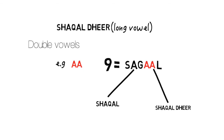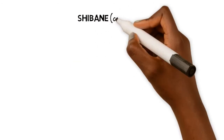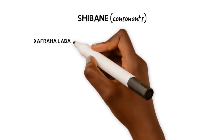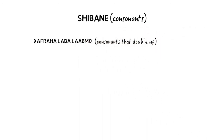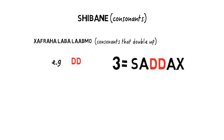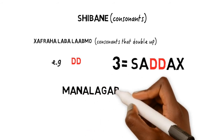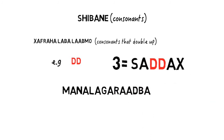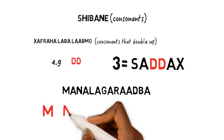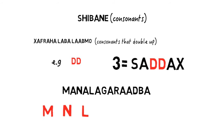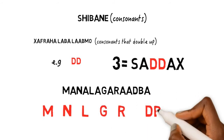Somali also has consonants that repeat or double up, called Harfahal Labalabmo. A good example is the number three, which in Somali is called Saddah — you have to stress the letter D and say Saddah. A good formula for knowing which consonants can repeat is the word Manalagaradba; all the consonants in this word have the ability to double up: M, N, L, G, R, D, and B.